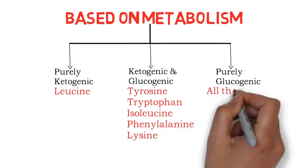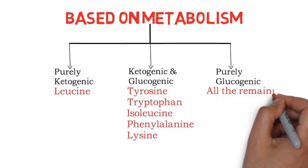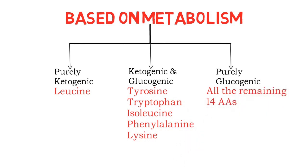All the remaining 14 amino acids are purely glucogenic. Mnemonic to remember both ketogenic and glucogenic amino acids is 'Table Tennis IPL': tyrosine, tryptophan, table tennis; IPL - isoleucine, phenylalanine, and lysine.